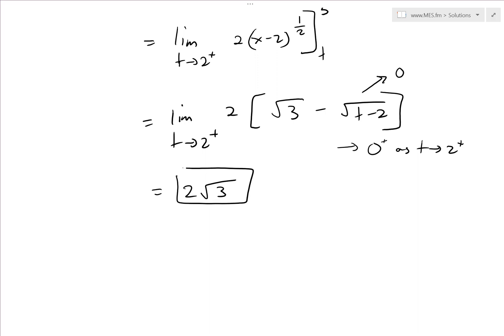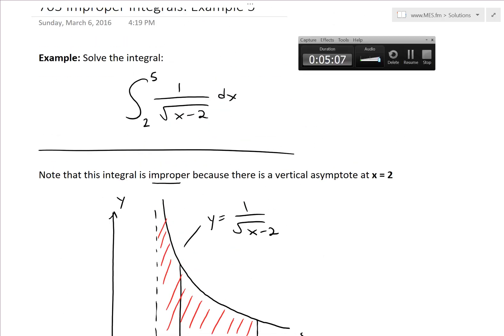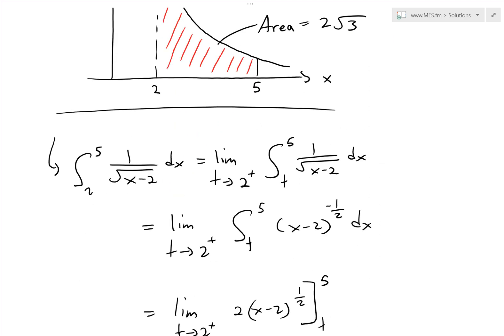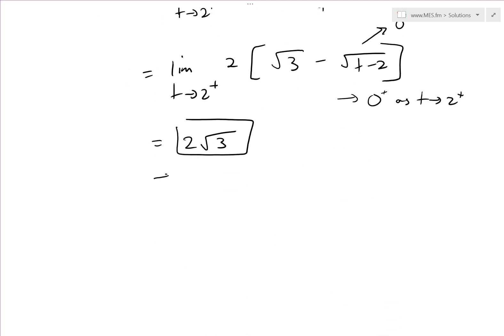This means the area under the curve is equal to 2 times square root 3. We can write that down—this area equals 2 square root 3. That's the answer.